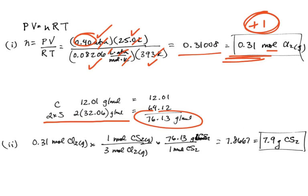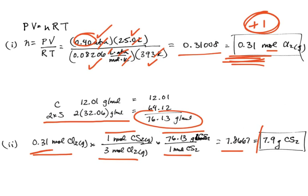Starting with the number from part A, I have 0.31 moles of chlorine. From the equation, for every three moles of chlorine it takes one mole of carbon disulfide, and one mole of carbon disulfide is 76.13 grams. On my calculator I get 7.8667, which rounds to 7.9 grams of carbon disulfide. This answer is worth two points.